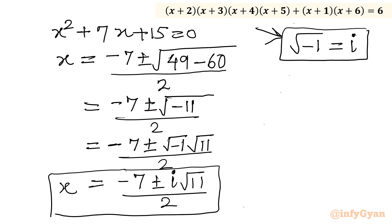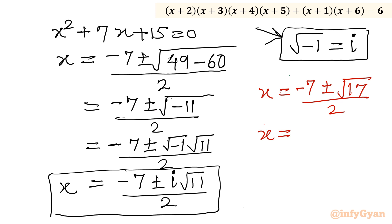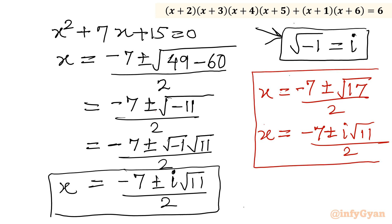So our complete set of solutions is: two real solutions x = (-7 ± √17) / 2, and two complex solutions x = (-7 ± i√11) / 2. I hope you liked this video. Thank you so much for watching. Don't forget to like, share, and subscribe. Bye bye till the next video. Good luck and take care of yourself.